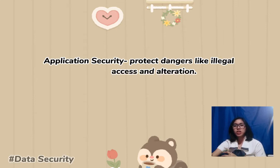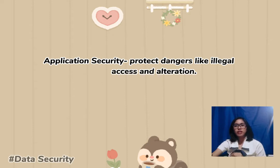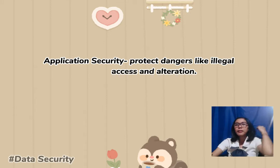The next topic is data security. Within data security there is what they call application security. Application security is the process of creating, integrating, and testing security measures into applications in order to protect them from illegal access and alteration. The importance of application security is that it can expose application-level flaws, assisting in the prevention of attacks.